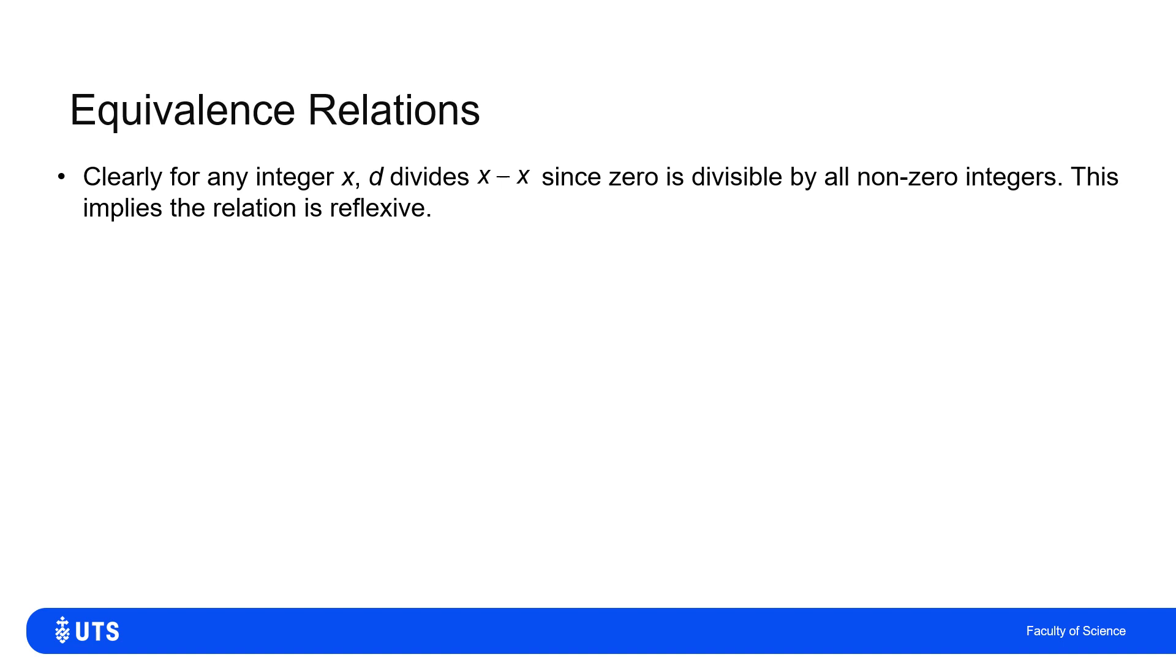So if I take any integer X, then clearly another non-negative integer D divides X minus X, because I can always divide zero by another integer. So every value X is related to itself, so therefore the relation is reflexive.